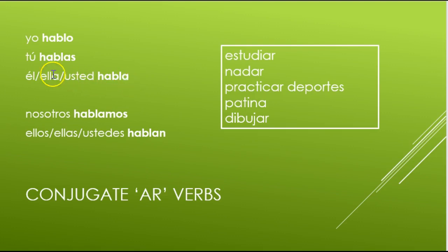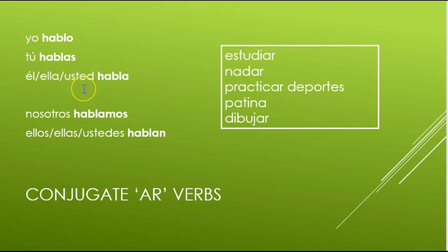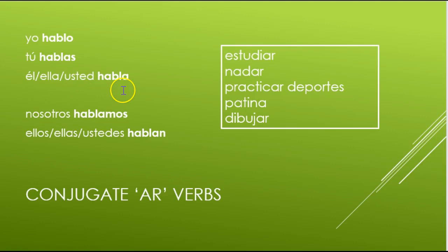Él, ella, usted habla. For él use habla, for ella habla, and usted uses habla as well. It's very important to know what these pronouns mean: él means he, ella is she, and usted is you — but speaking with respect to an adult. Tú you use with friends, family, people you would normally call by their first name. So tú hablas and usted habla both mean 'you speak' and both are singular — only one person being addressed.